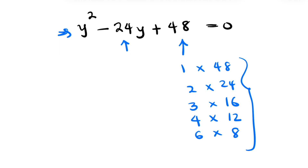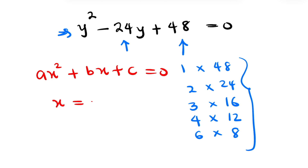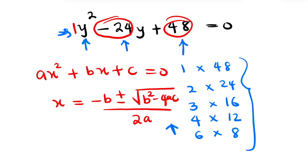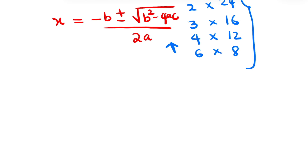The default quadratic equation is ax squared plus bx plus c equals zero, and x equals negative b plus or minus the square root of b squared minus 4ac, all over 2a. In our equation, a is the coefficient of y squared, which is 1; b is negative 24; and c is positive 48. We are going to substitute each of those into the quadratic formula to solve for y.